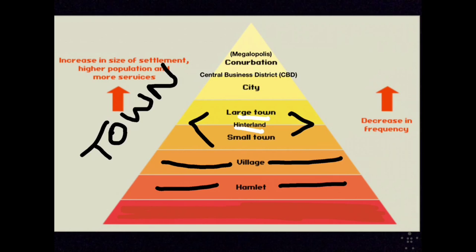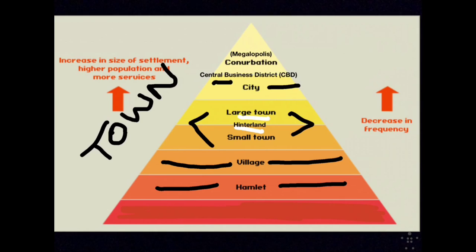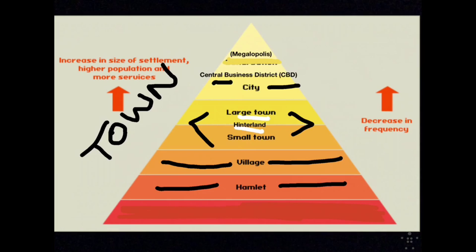Then we move up into a city. A city has a larger population, more functional specializations, larger hinterlands, and a greater centrality. Within the city, you have a central business district — sometimes abbreviated CBD — which is where retail stores, business offices, and cultural activities are concentrated in one area. At the top of the hierarchy is the megalopolis, where multiple cities have grown together. An example in the United States is Boswash — Boston to Washington, D.C.